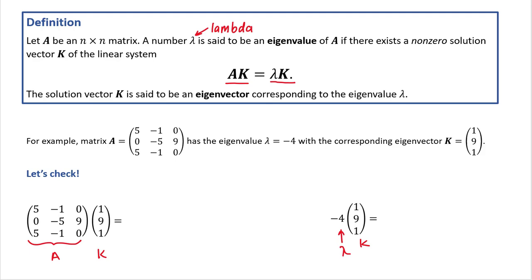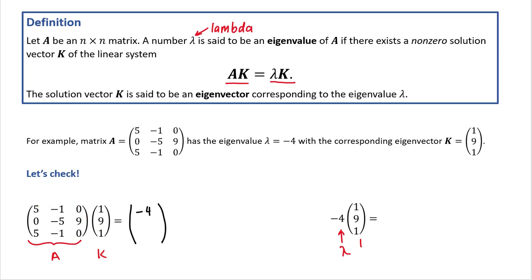Let's start by multiplying matrix A with vector k. To multiply a matrix by a vector, we start by multiplying each element of the vector by each element of the first row and adding the results — in other words, 1 times 5 plus negative 1 times 9 plus 0 times 1. This gives us negative 4, which is the first element of the resulting vector. Next, we repeat this with the second row of the matrix, multiplying each element of the vector by each element of the second row and adding the results.